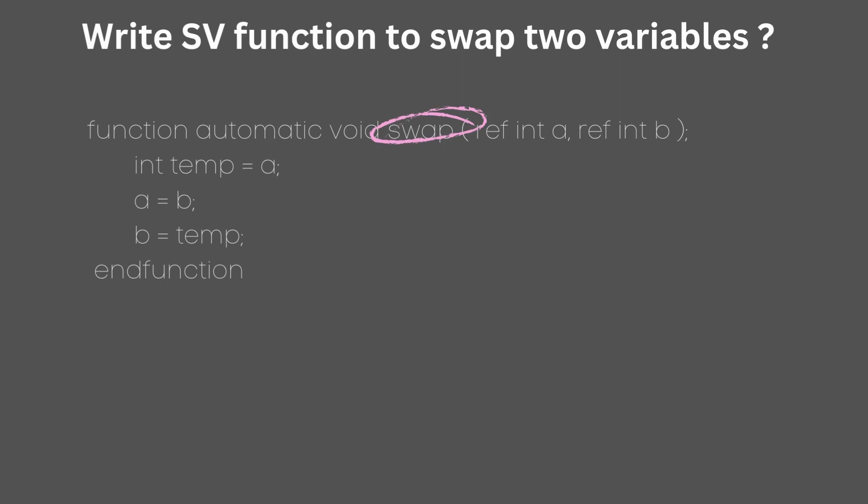The function is called swap and is of type void as there is no need to return anything. Here both the integer arguments are references. A reference is nothing more than a pointer to a memory location where the actual values are stored.